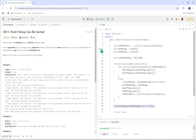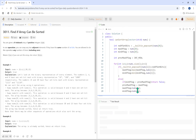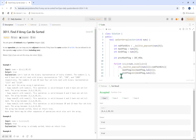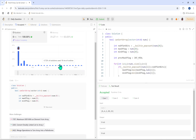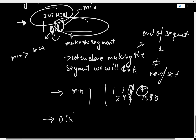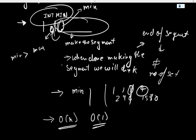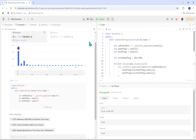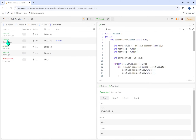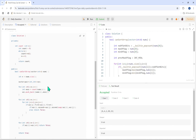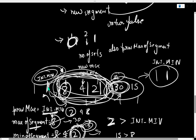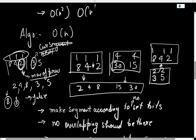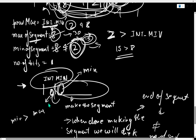Let's see if it runs for the sample test cases - yes it runs. Let's submit it. It is submitting successfully. I hope this O(n) approach is understood - we are using a single loop, and space-wise it's O(1) since we're just using variables. The previous bubble sort approach was O(n) space and O(n²) time, while this segment approach is O(n) time and O(1) space.